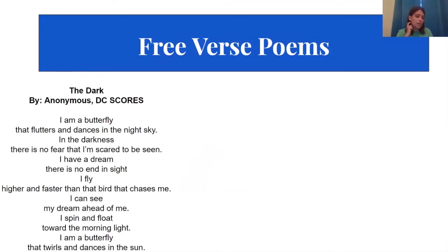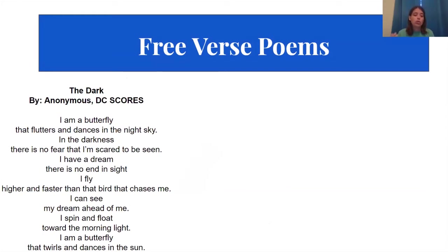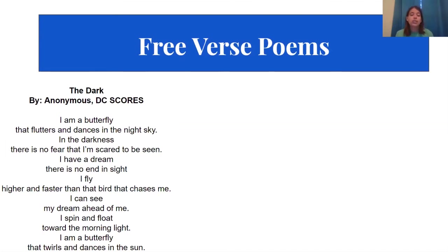We're gonna look at some free verse poems to give you an idea of what a free verse poem might look like. The first one is called 'The Dark' by Anonymous from DC Scores. It says: 'I am a butterfly that flutters and dances in the night sky. In the darkness there is no fear that I'm scared to be seen. I have a dream. There is no end in sight. I fly higher and faster than that bird that chases me. I can see my dream ahead of me. I spin and float for the morning lights. I am a butterfly that twirls and dances in the sun.' This poem does not have a rhyme scheme. The lines are all different lengths — some are very short, two words; some are longer. It has one stanza. Again, no rhyme scheme, so it doesn't have to rhyme. This is a free verse poem because it is written how they wanted to get the point across about this butterfly and this dance of the night.